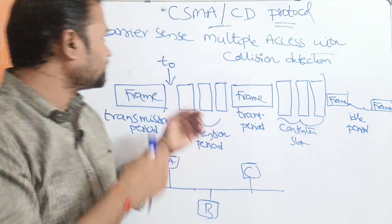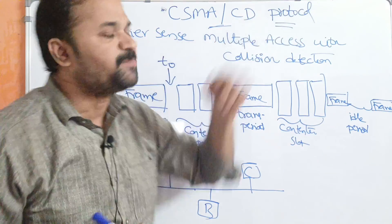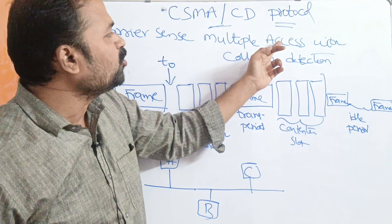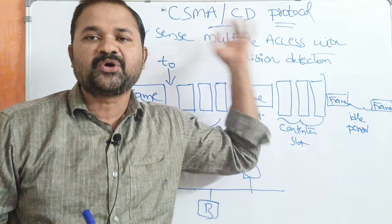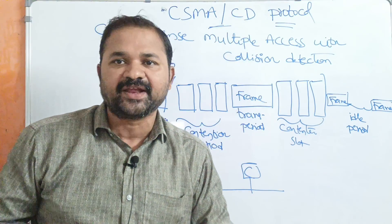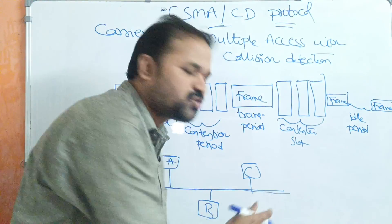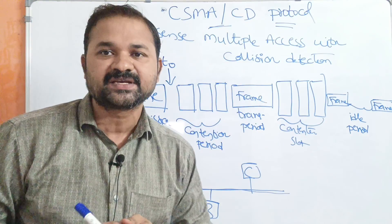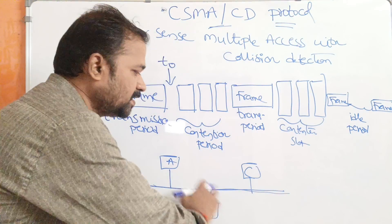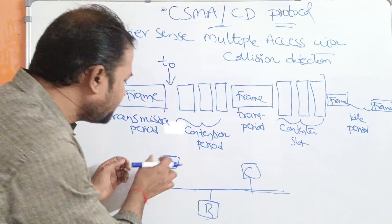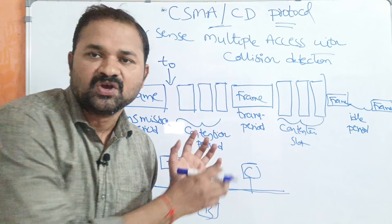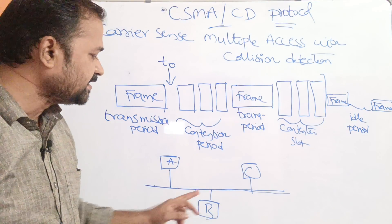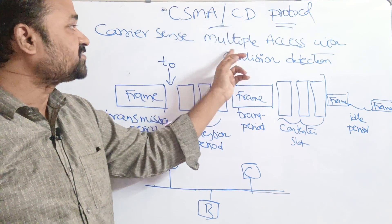Let us discuss CSMA/CD protocol. CSMA/CD stands for Carrier Sense Multiple Access with Collision Detection. Carrier means a communication channel — a transmission medium, also called a channel. Sensing means listening. Multiple Access means we have a shared medium, a transmission channel, where multiple devices are connected. Let us assume we have three devices A, B, and C connected over this channel. MA stands for Multiple Access.